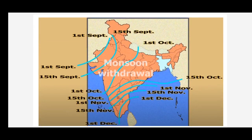The withdrawal or retreat of the monsoons is a gradual process. The withdrawal begins in the northwestern states of India by early September. By mid-October it withdraws completely from the northern half of the peninsula. The withdrawal from the southern half of the peninsula is fairly rapid, and by early December the monsoon withdraws from the rest of the country.